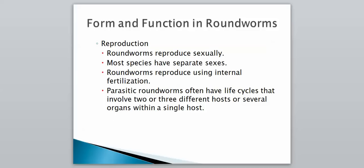Roundworms reproduce sexually and most species have separate sexes — remember that flatworms were hermaphrodites with both sexes in one organism. They reproduce using internal fertilization, meaning the egg is fertilized inside the body. Parasitic roundworms can have life cycles that involve two or three different hosts, or they can live in several different organs within a single host. That is it for the first part of roundworms — let me know if you have any questions.